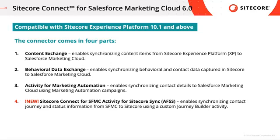The third part of the connector is the Activity for Marketing Automation, which enables synchronizing contact details to Salesforce Marketing Cloud using marketing automation campaigns in Sitecore Experience Platform. The fourth and final part, which is the newest part introduced with version 6.0, is a Sitecore Connect for Salesforce Marketing Cloud activity for Sitecore Sync. This part enables synchronizing your contact journey and status information from Salesforce Marketing Cloud to Sitecore using a custom journey builder activity.